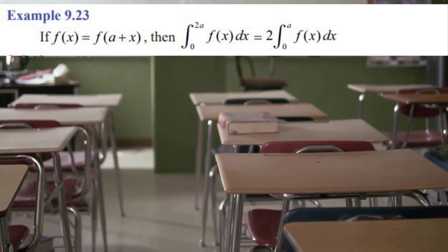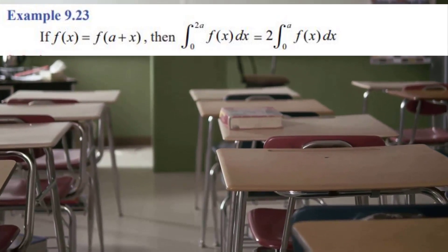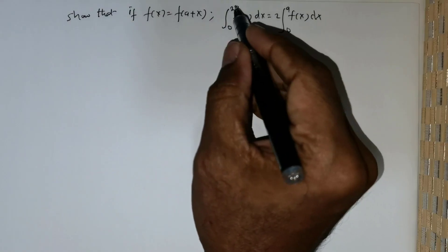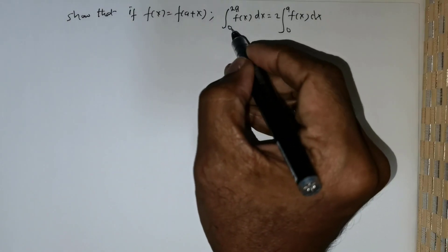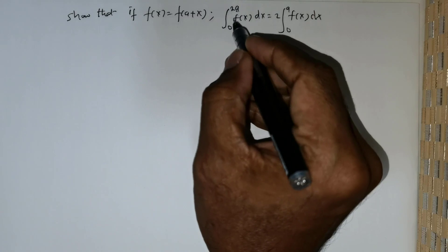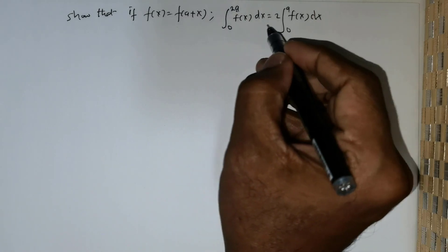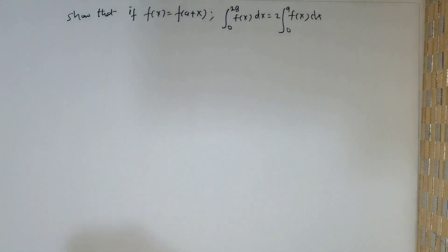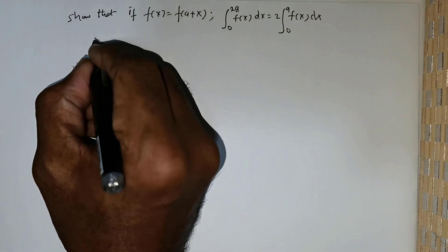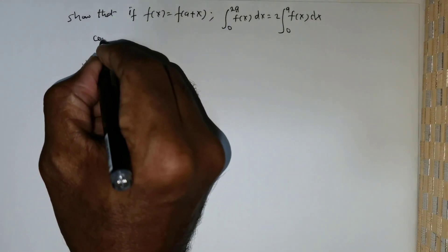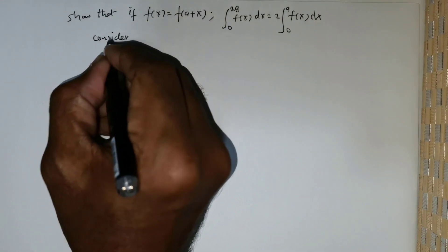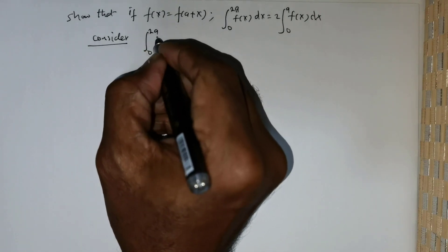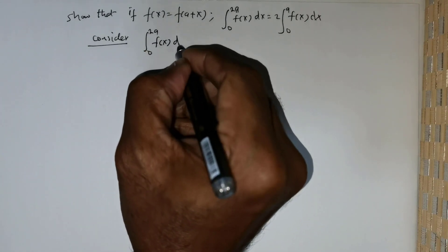Students, we are given the question: if f of x is equal to f of a plus x, then we are to show that the integral from 0 to 2a of f of x dx is equal to 2 times the integral from 0 to a of f of x dx. I would start by considering the integral from 0 to 2a of f of x dx.